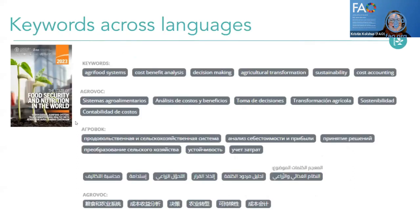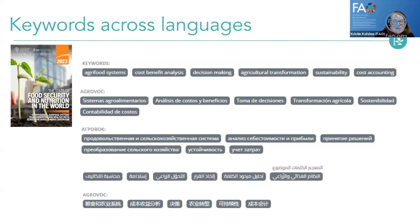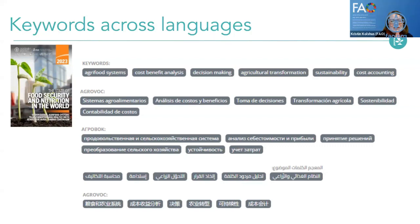Let's talk about keywords across languages. Here's an example of a relatively new FAO publication. You can see a set of keywords in English, but we also have the same keywords in the other six FAO languages. This is the beauty of AgriVoc — not just these six languages, but wider. I can search for cost-benefit analysis, find publications in Thai, search in Thai and find documents in Ukrainian, or search in Ukrainian and find documents in Belarusian or Brazilian Portuguese. It's all about being able to find materials across languages.